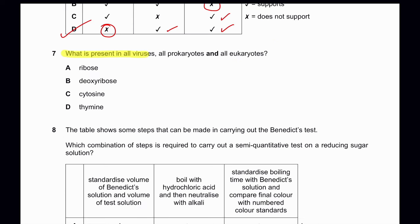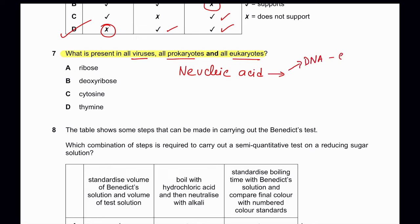Question 7: What is present in all viruses, all prokaryotes, and all eukaryotes? Viruses, prokaryotes, and eukaryotes all consist of at least a nucleic acid. The nucleic acid — whether DNA or RNA — should contain cytosine. Even in RNA, cytosine is present. So cytosine is the correct answer.